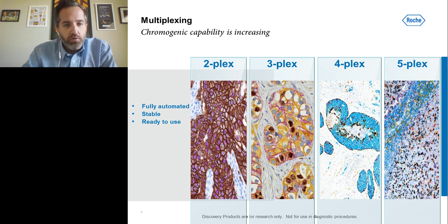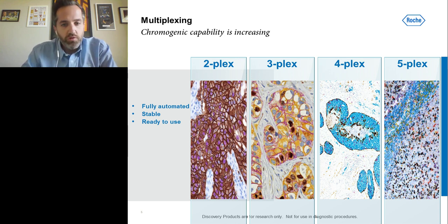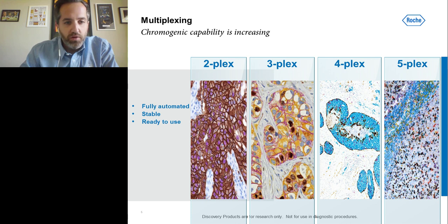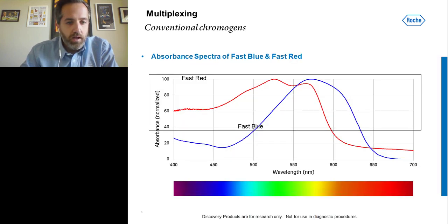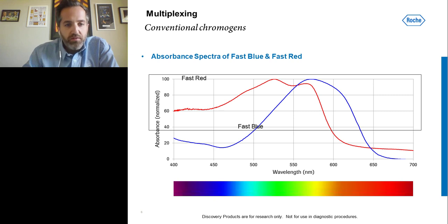Chromogenic multiplexing has really expanded over the past two to three years with the introduction of these new chromogens and the expansion of automation within Roche Tissue Diagnostics. We're now seeing five or six different markers on the same slide. This is all down to how the new chromogens work. Conventional chromogens such as fast red and fast blue have a very broad absorbent spectra, making them very difficult to deconvolute — if they overlap, it's very difficult to see different colors emerging.